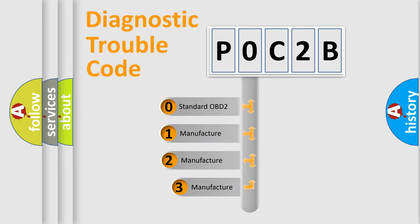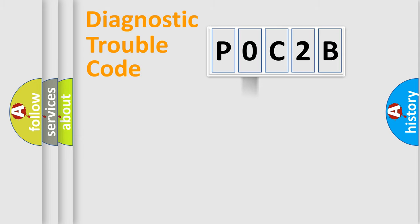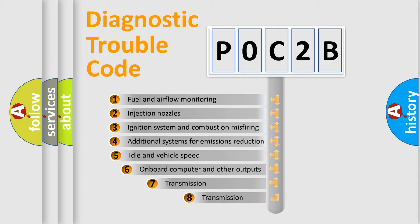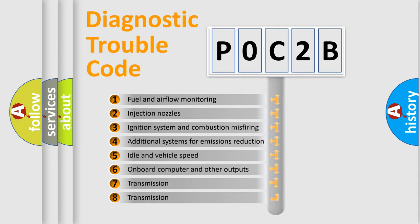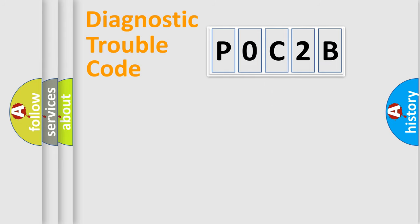If the second character is expressed as zero, it is a standardized error. In the case of numbers 1, 2, or 3, it is a manufacturer-specific expression of the car-specific error. The third character specifies a subset of errors. The distribution shown is valid only for the standardized DTC code.